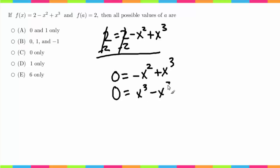Now I'm going to factor this. The greatest common factor is x², so this becomes x²(x - 1) and that's equal to 0.